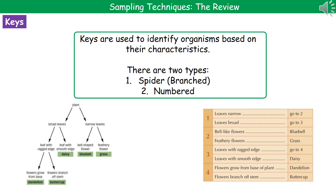The two types of key are a numbered key, which you can see in the bottom right, and a spider or branched key in the bottom left. The spider or branched key works as a series of yes or no questions. You look at the plant — in this example — does it have broad leaves? If it does, you go to the broad leaf side. Then you look: does it have a ragged edge or a smooth edge? You keep following that line down until you end up with the name at the bottom. Nice and simple — only quick yes or no, or simple choices like broad or narrow leaves.